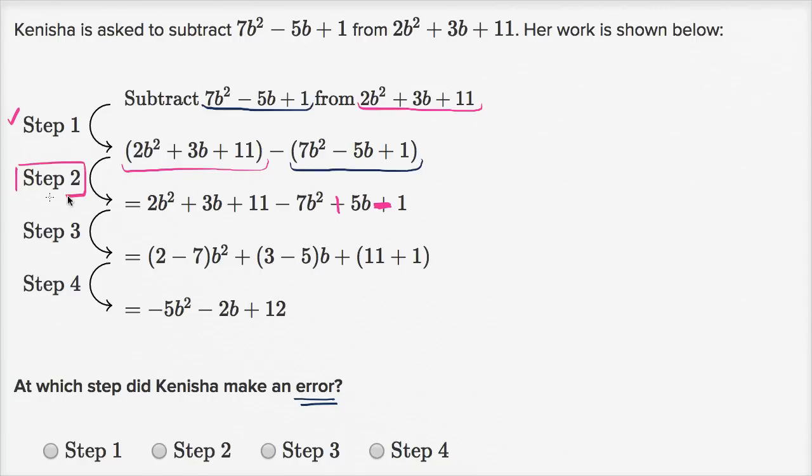So she's making a mistake in step two when she distributes this negative sign. So step two is where she actually made her error.